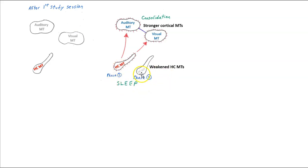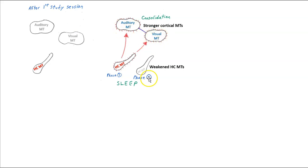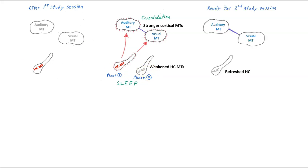During sleep, we have our two phases of sleep. We're going to consolidate the cortical memory traces — strengthen them and link them together. This is because we're firing up the hippocampal memory traces and using those to stimulate the cortical memory traces. Then we're going to refresh the hippocampus, weakening the hippocampal memory traces in preparation for new learning.